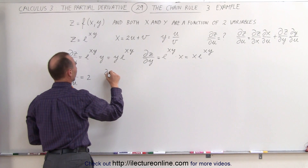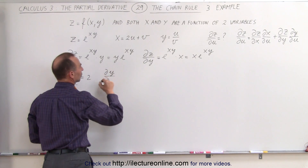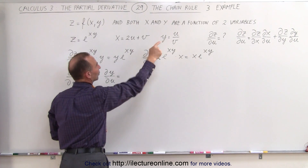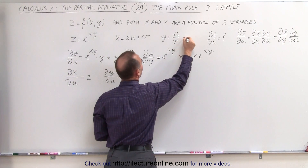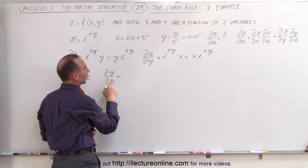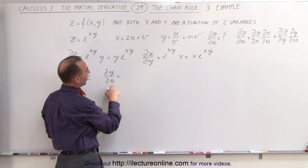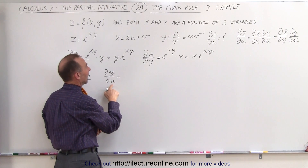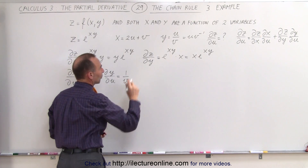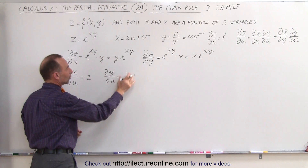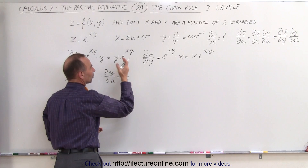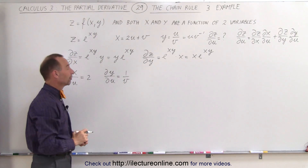The partial of y with respect to u: here we have a quotient, so this can be written as u times v to the minus 1. Since we're differentiating with respect to u, v is a constant, so we can simply write it as 1/v. Since u is the variable and v is the constant, we take the coefficient of u, which is 1/v.